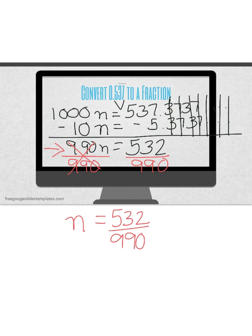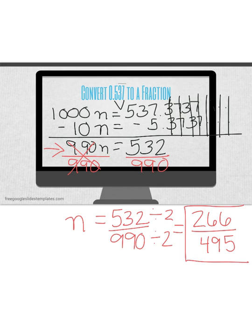They're both even, so I know that's not in simplest form. You can either use your calculator simp key, or you can use number sense. I know they're both going to be divisible by 2. That would give me 266 over 495. And I do believe that's probably in simplest form. So you have converted our original number into the fraction 266 over 495.